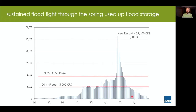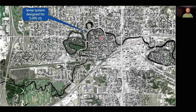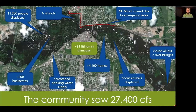Here's the hydrograph for that spring. Starting in mid-April, we get up near the 100-year flood event—5,000 CFS—then it tapers off. But they keep getting events. They thought they were out of the woods when that rainstorm hit and 27,000 CFS came down through the valley. Here's an aerial view of Minot. The system had been designed for 5,000 CFS, which would contain it within the channel through town. With 27,000 CFS, the community was overrun.